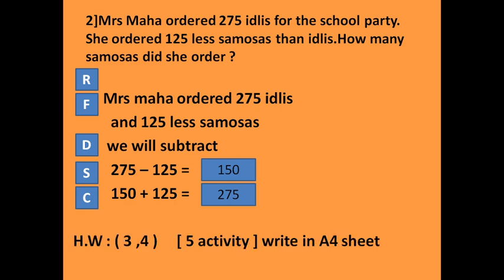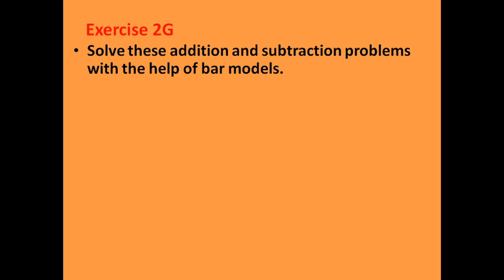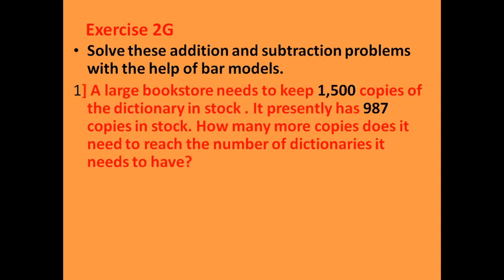The homework is numbers 3 and 4. For number 5, I want you to make it as an activity on A4 sheets, and you can submit it to me after the vacation. Now, exercise 2G — this is how we can use bar models to solve problems. Solve these addition and subtraction problems with the help of a bar model.